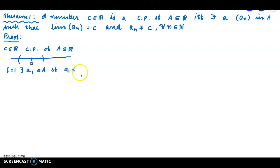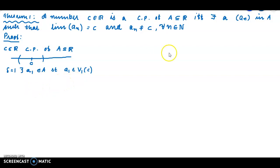There exists a point A₁ element of the neighborhood Vδ(c). For delta equal to 1, we take V₁(c). So for delta equal to 1, A₁ is chosen in V₁(c). Then assume delta equal to 1/2.